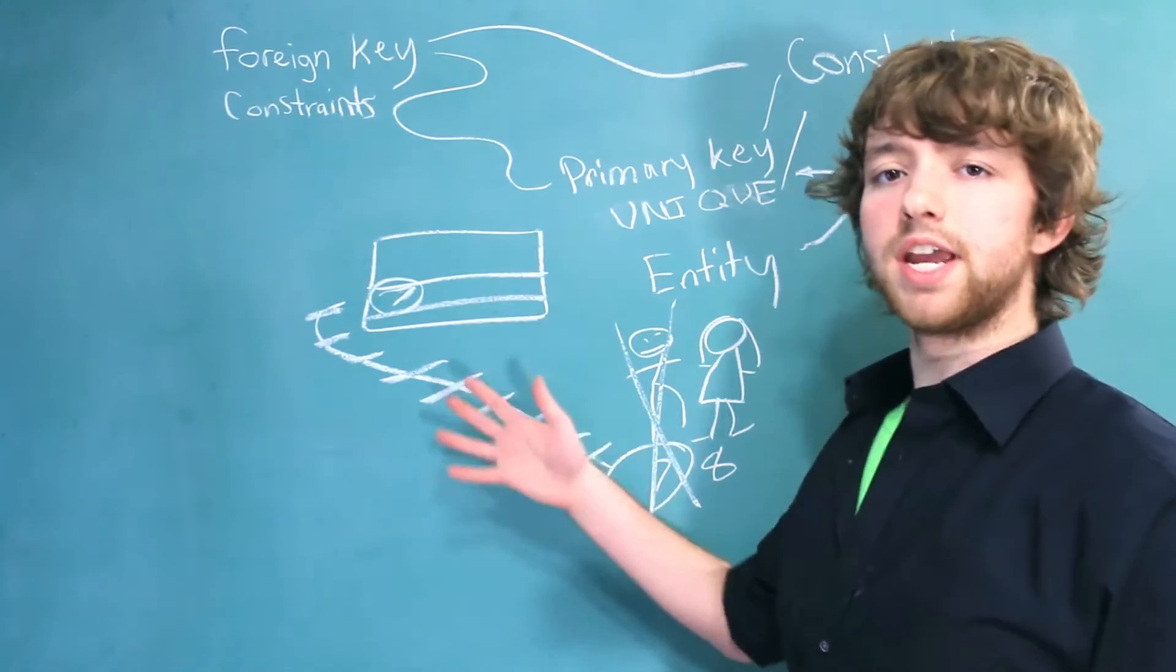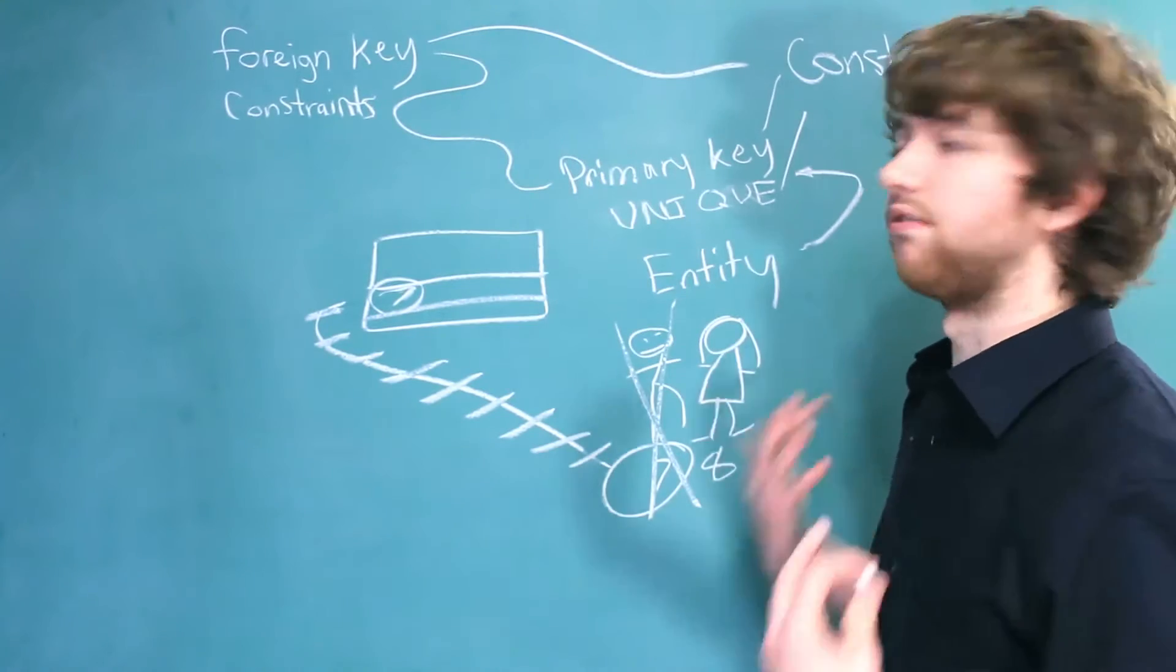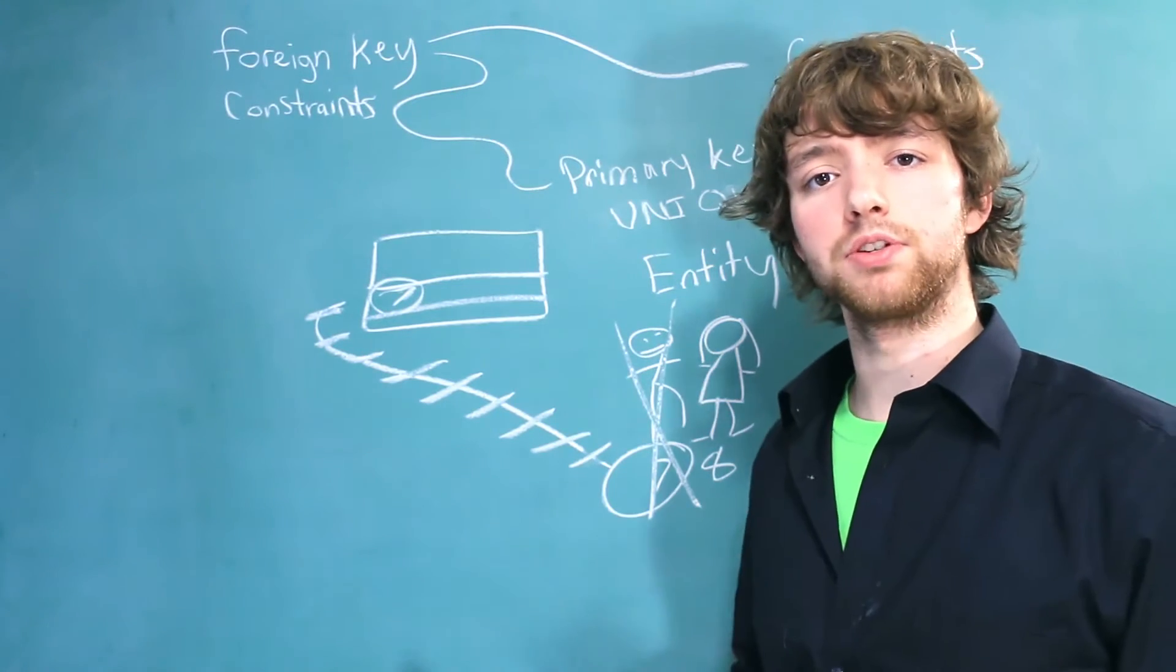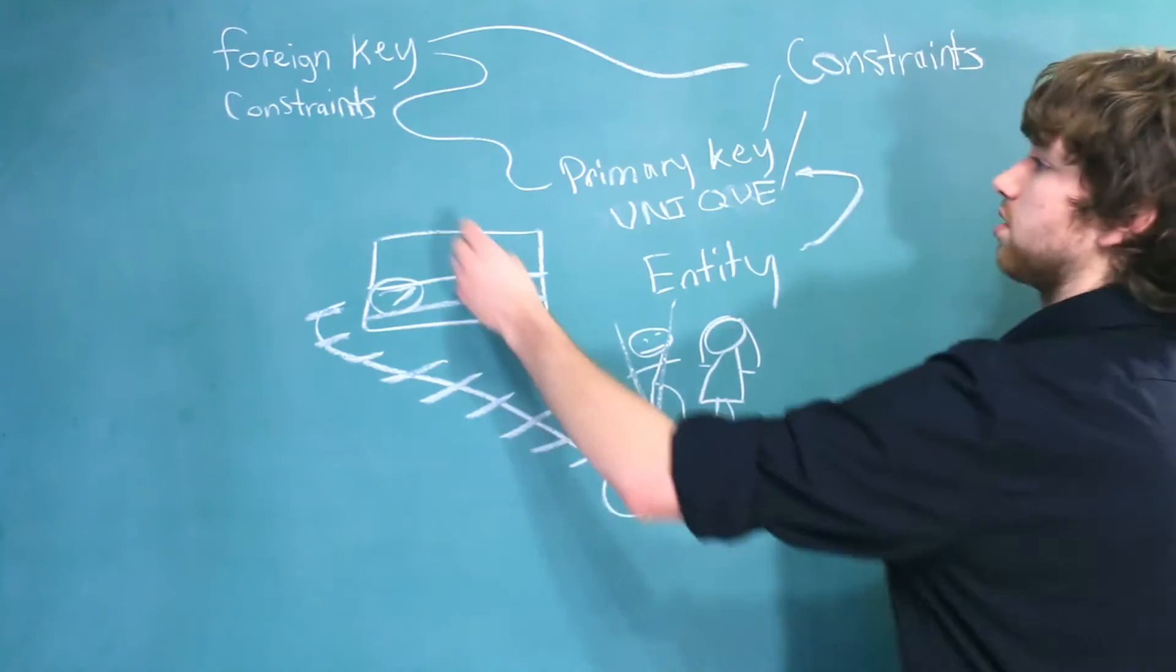In that situation, our data would be outdated. We don't want that. That would violate data integrity rules. So to force those integrity rules, we use constraints.